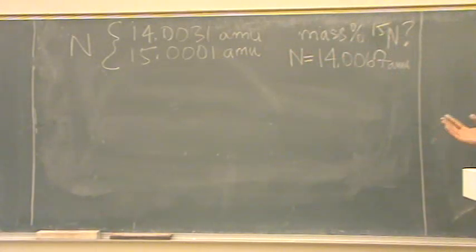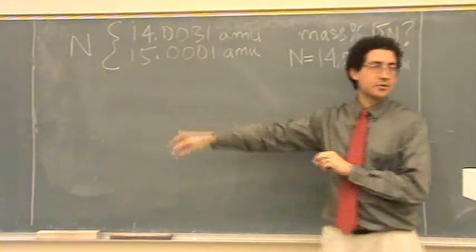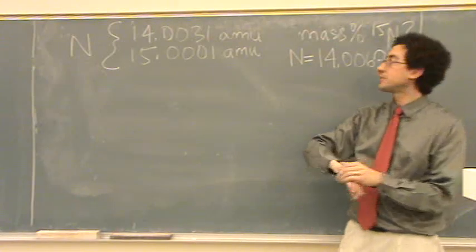Okay, this is one of the test questions, mysterious, we forgot which one it is, but it doesn't matter. So, the setup is you have nitrogen in two isomers, or not isomers, isotopes.